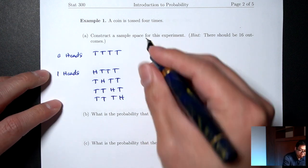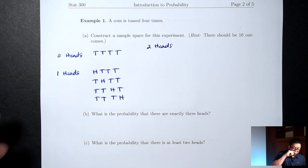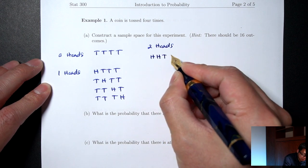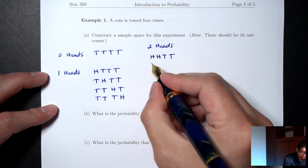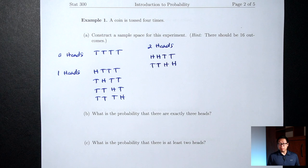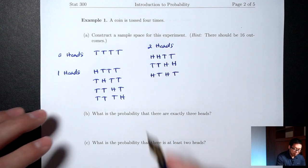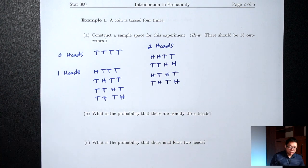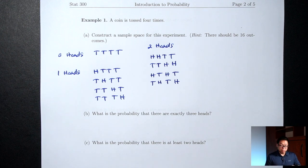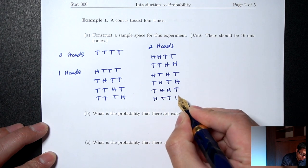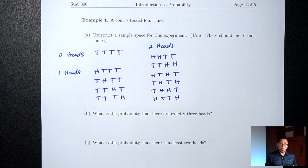For two heads: heads-heads-tails-tails, tails-tails-heads-heads, heads-tails-heads-tails, tails-heads-tails-heads, tails-heads-heads-tails, and heads-tails-tails-heads — that's placing the two heads in every combination of positions.